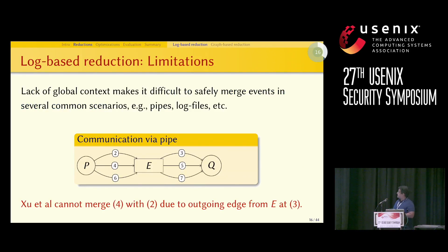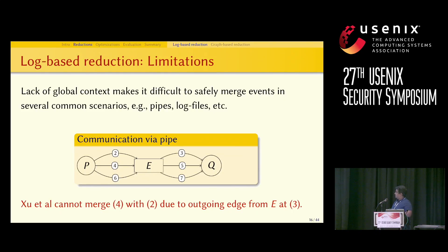The limitation of Shu et al.'s technique is that it only considers local context. This makes it very difficult to perform merges on common scenarios such as pipes. For example, when processes P and Q communicate through pipe E, intervening events prevent any merging — an outgoing event from node E at time 3 occurs between incoming edges at times 2 and 4.